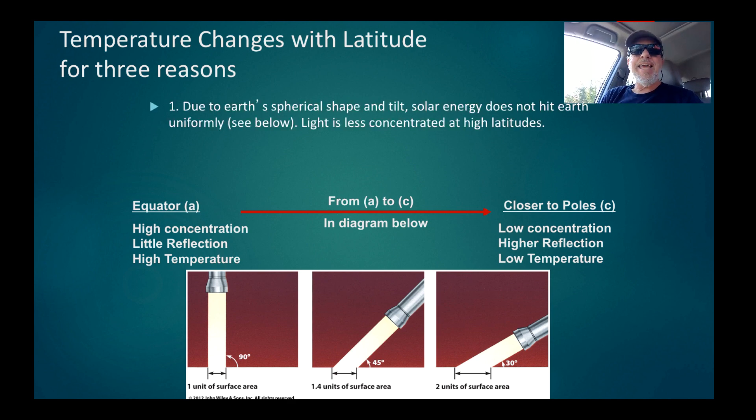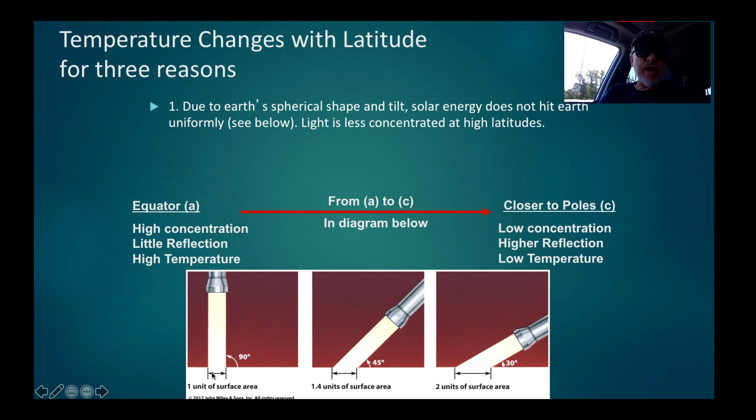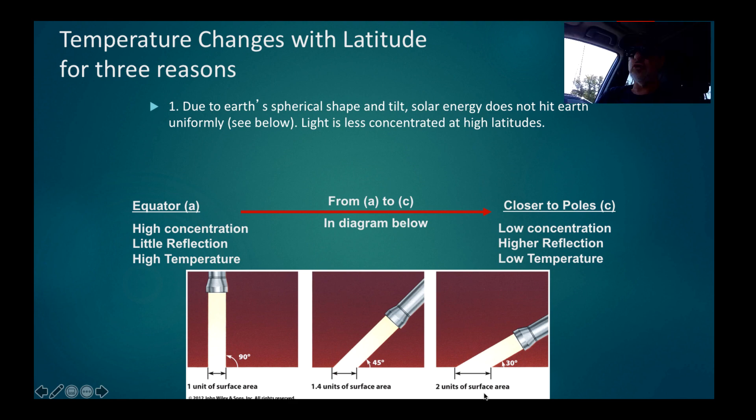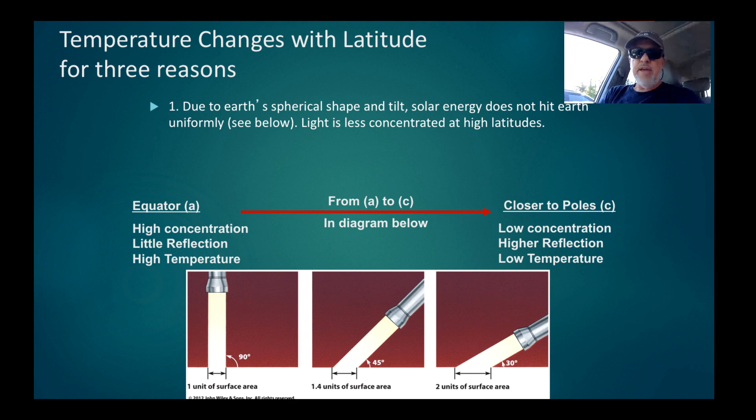Reason one: due to the Earth's spherical shape and tilt, solar energy does not hit the Earth uniformly. In the equatorial regions, light comes directly down and a certain cross area of light illuminates a certain cross area of land. If you go to a 45 degree angle, the same cross section of light intercepts 1.4 units of surface area. Therefore, the light is less dense.